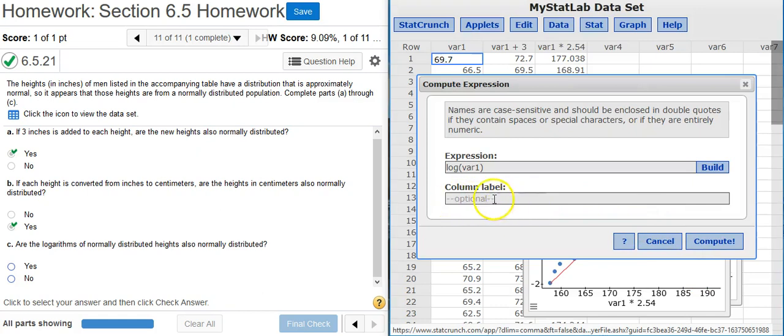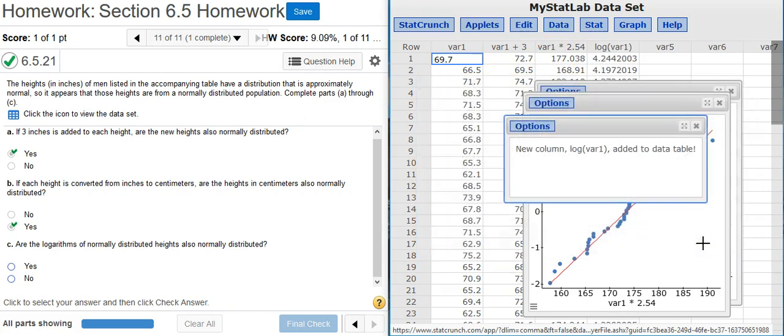And notice how we've not been using this column label field. When you leave this field blank, what it does is it actually gives a title to the column based on the expression that you provided. This is really helpful, because notice what we've got here. We've got different columns of transformed data. And the way we tell what's what is with the title here for the columns. Because we left this blank, StatCrunch just went ahead and used the transformation as the title for the column. That's very convenient when you're actually transforming data in multiple columns. So again, we're going to leave this blank. And now we've got our transformed data.